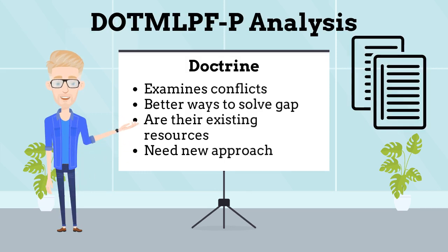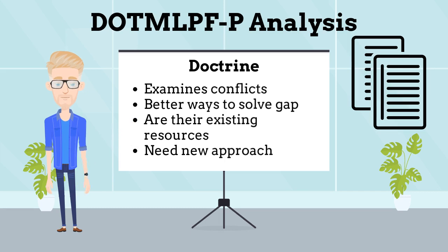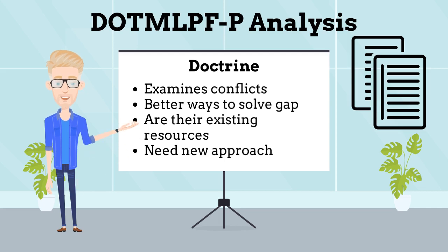Now let's examine each of the DOTP Analysis elements. The first analysis is doctrine. The doctrine analysis examines the way the military fights its conflicts with emphasis on maneuver warfare and combined air-ground campaigns to see if there is a better way that might solve a capability gap. A few questions to ask are: Is there an existing doctrine that addresses or relates to the business need? Is it joint? Service? Agency? Are there operating procedures in place that are not being followed which contribute to the identified need?